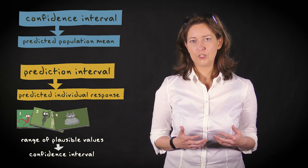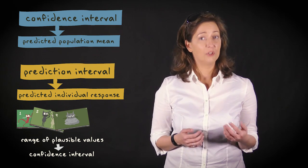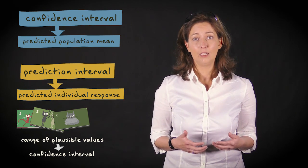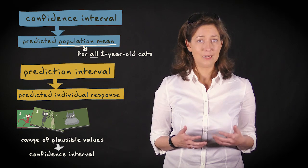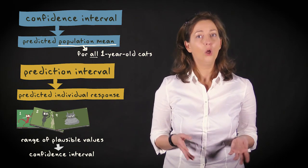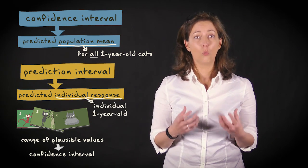However, calculating such an interval for a predicted score is a bit more complicated. With predicted scores we have to be explicit about what we're predicting exactly. Are we talking about the predicted mean score for the group of all one year old cats in the population? Or are we talking about the predicted score for an individual one year old cat?